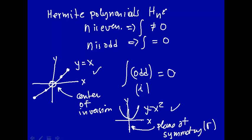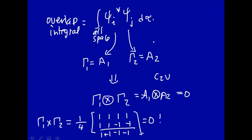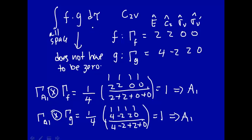So symmetry is useful — its usefulness is that sometimes you can say an integral is equal to zero. We had examples here: two wave functions of different symmetries A1 and A2 multiply to give zero. In general, for a function with a reducible representation, you project out any A1 component. If both functions contain A1, the integral doesn't have to be zero; but if one function lacks A1 symmetry, the integral is forced to equal zero.